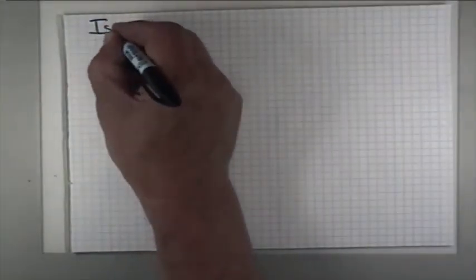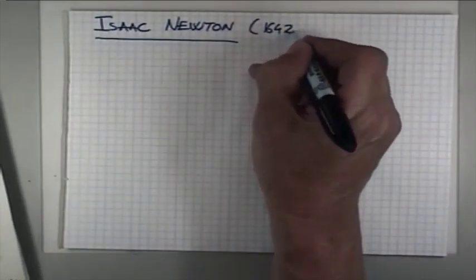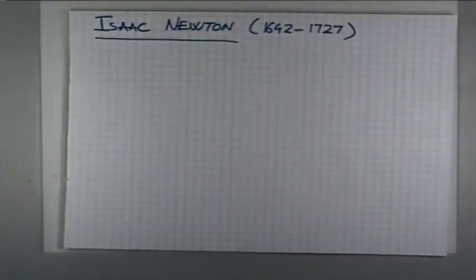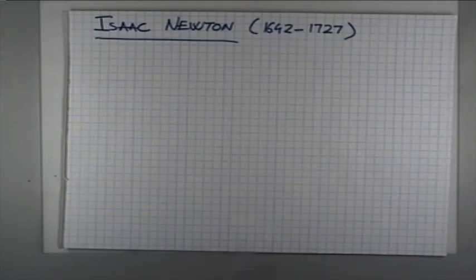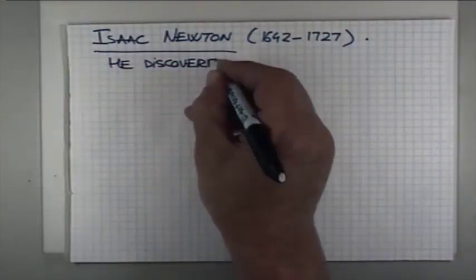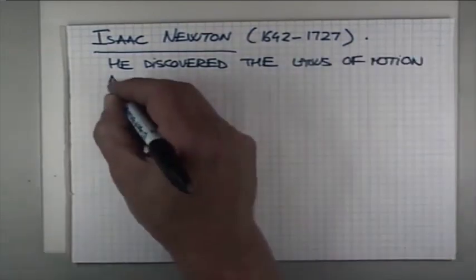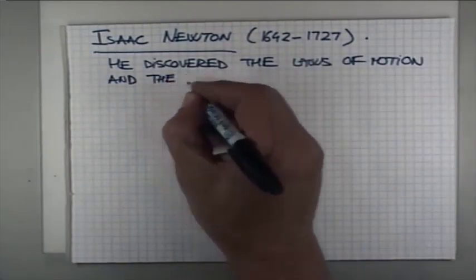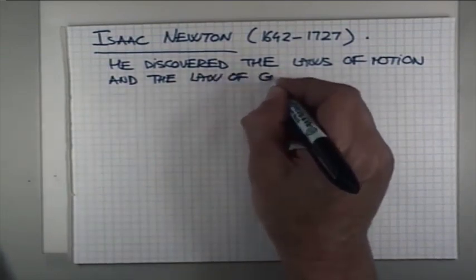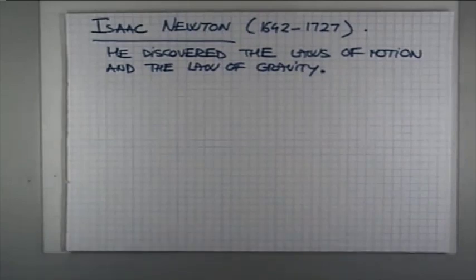The next giant from this period is Isaac Newton. He lived from 1642 to 1727, quite a long life, and he's credited for discovering the laws of motion and the law of gravity.